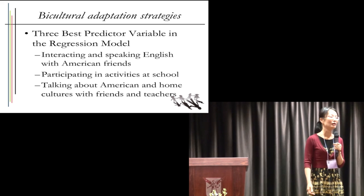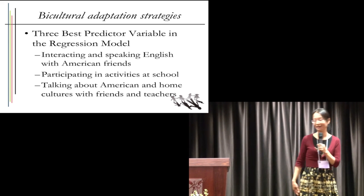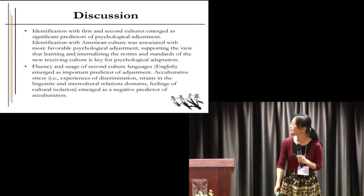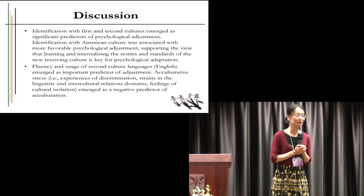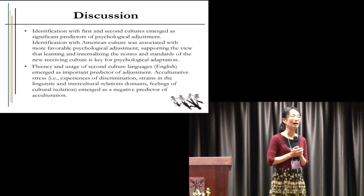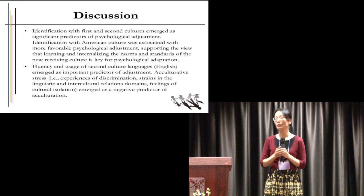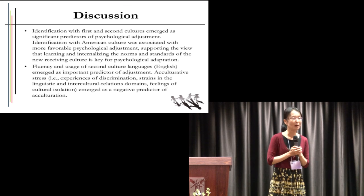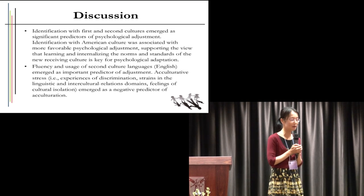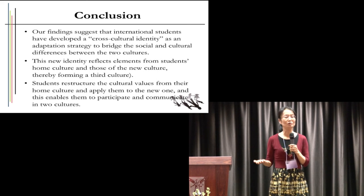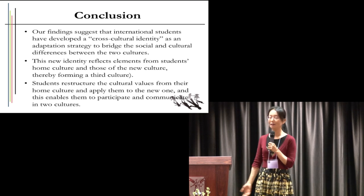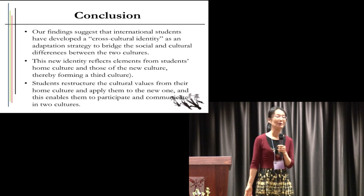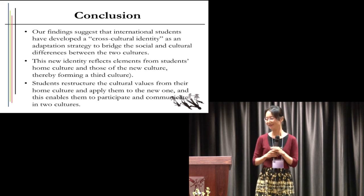This may have some implications for educators on campus. We need to create an environment to reduce their stress — the less stress they have, the better they can form their bi-cultural identities. We also need to provide more opportunities for them to speak English and participate in school activities. And if we can have lectures for them to talk about their home cultures and American cultures, this will also help them to form better bi-cultural identities. In this way, we can have a more harmonious campus with good diversity but also harmony. Thank you.